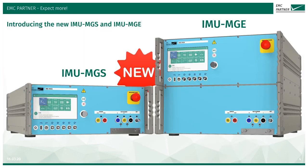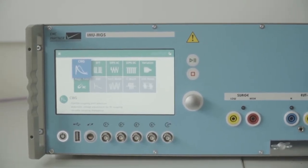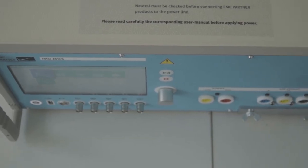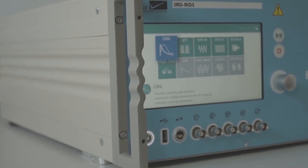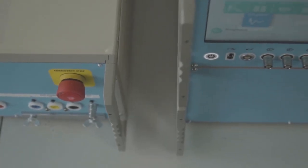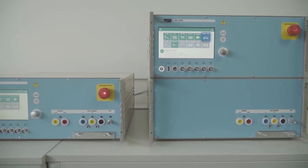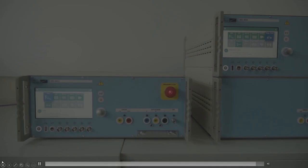The subject of our presentation today is the new IMU-MG series of immunity testers. The two products we're going to introduce to you today are the IMU-MGS, our product offering up to 5kV surge and EFT, complemented by the IMU-MGS with surge up to 8kV, ringwave and telecom also to 8kV and EFT to 7kV.